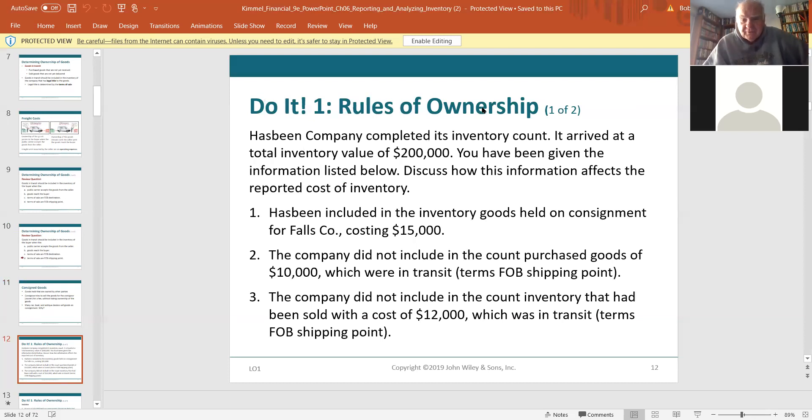Has-been company, completing its inventory count. It had a total value of $200,000. Now we have some information here we want to look at. We physically counted $200,000. Discuss how this information affects the physical count. Wow, first jolt of the morning. Has-been included in the inventory goods held on consignment. Should they have counted those goods, Leiber? Do those goods belong to Has-been, who are actually holding it, or does it belong to the people who gave it to them?